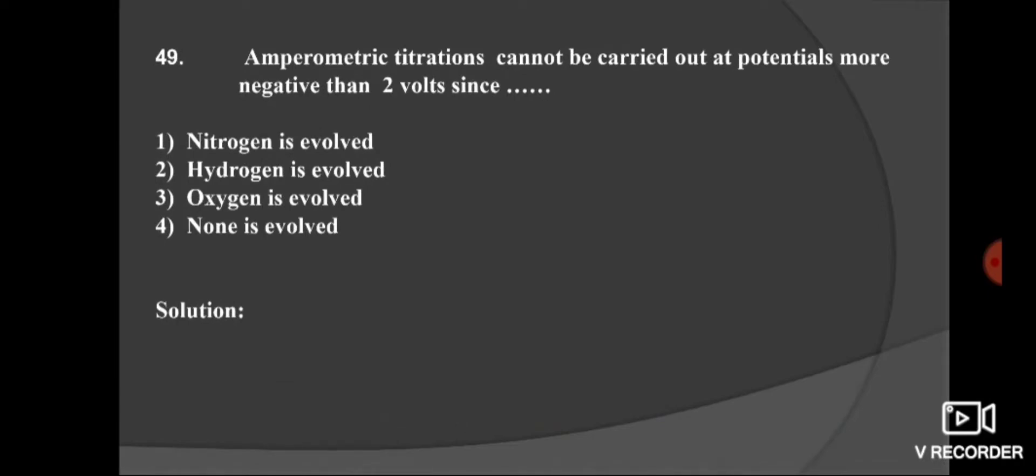Next question. In amperometric titration, cannot be carried out at potential more negative than 2 volts since: option 1, nitrogen is evolved; option 2, hydrogen is evolved; third, oxygen is evolved; and none of this. Here in amperometric titration, if carried out at potential more negative than 2 volts, hydrogen is evolved. Option 2 is the right option.